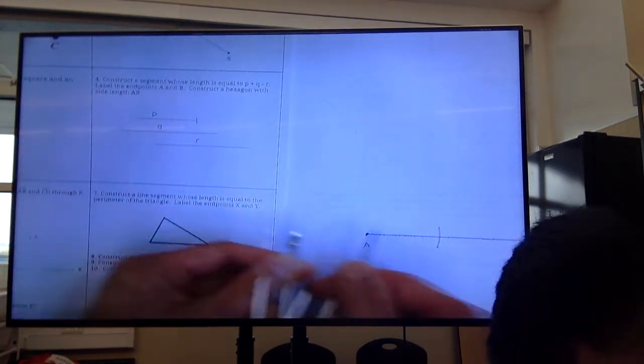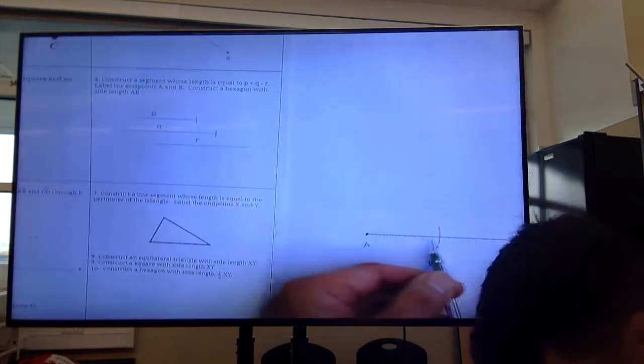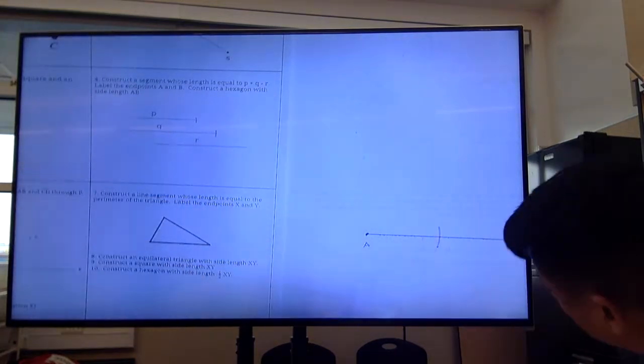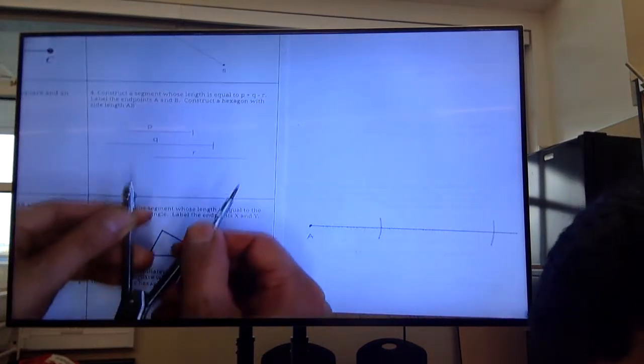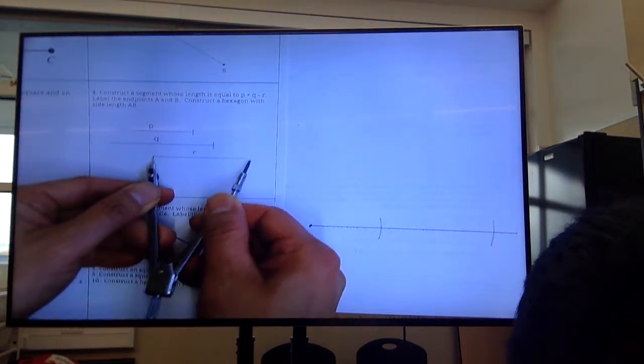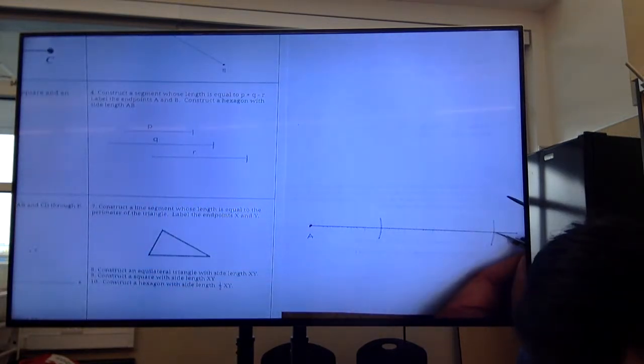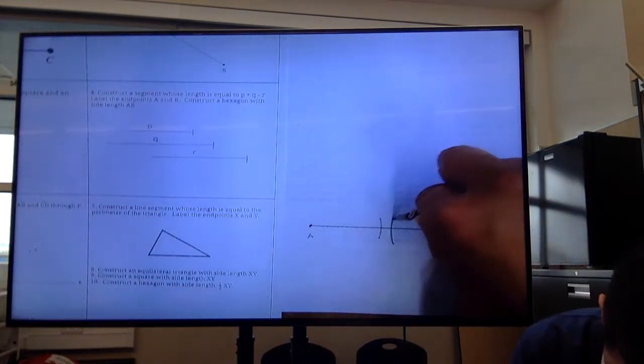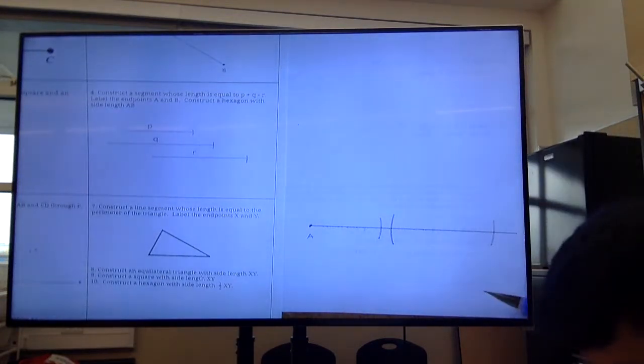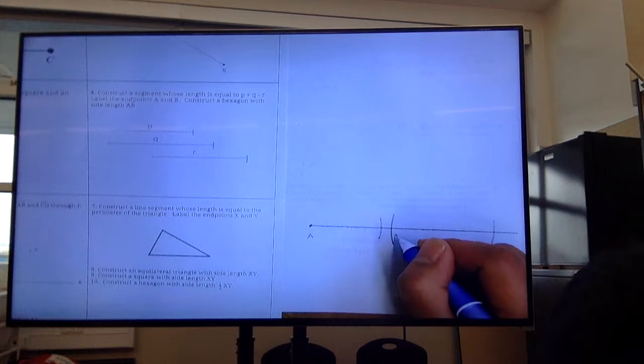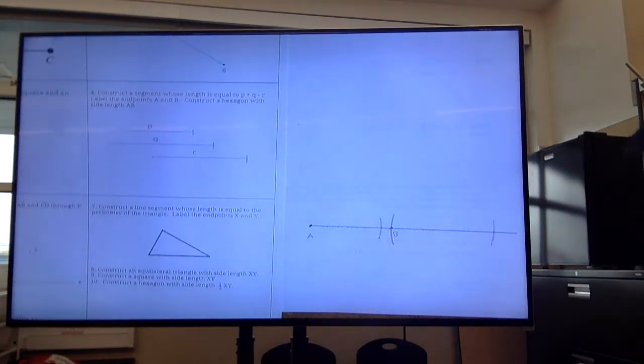There's P plus Q, and we want to subtract R from it. We want to go backwards by R. Remember to label the endpoint B. So there is segment AB.